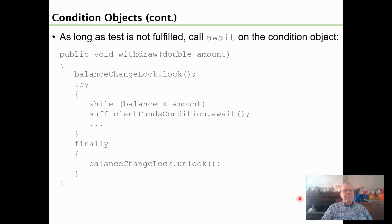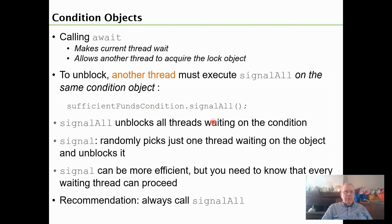Here's what you might put on a condition object. We have this sufficientFundsCondition and it has this method called await. If you call await, it makes the current thread wait and allows another thread to acquire the lock object temporarily. To unblock, another thread has to execute signalAll. Here's the method that sufficientFundsCondition on the other thread has to execute: signalAll. You could use signal, but we tend to say signalAll because it unblocks all the threads. We don't have to randomly pick just one.